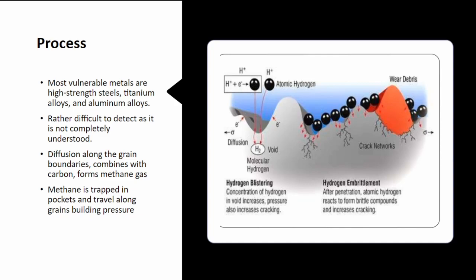To talk about the process, a couple of preliminary things. Some materials are more susceptible than others. I have some examples there: high strength steels, titanium alloys, and aluminum alloys. Basically metals with a higher tensile strength are more subjected to this.